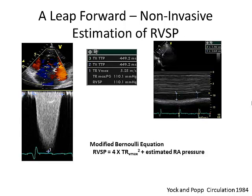The next leap forward in diagnosis was by Jock and Popp in 1984, publishing the use of Doppler echo to diagnose pulmonary hypertension. We use tricuspid regurgitation with the modified Bernoulli equation: 4 times velocity squared equals the pressure drop between right ventricle and right atrium in systole. Since the pulmonic valve is open in systole, PA pressure equals RV systolic pressure in the absence of pulmonic stenosis. We add an estimate of right atrial pressure based on IVC size and collapse to derive the PA pressure.